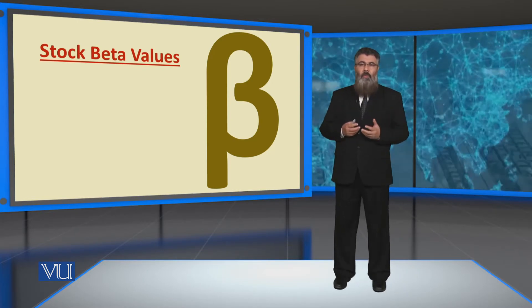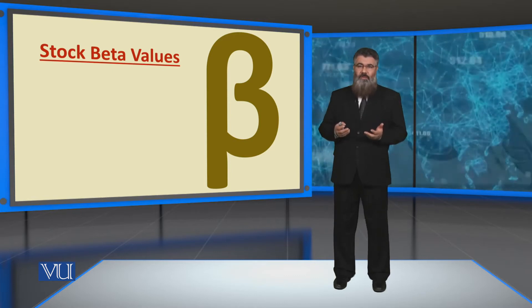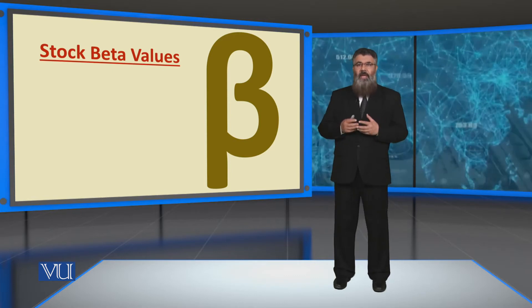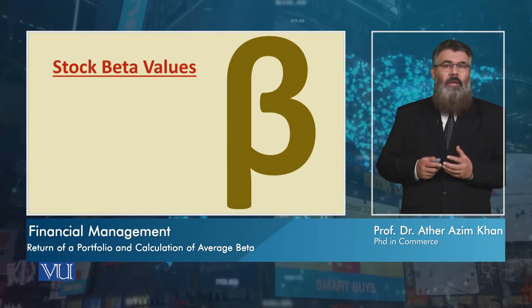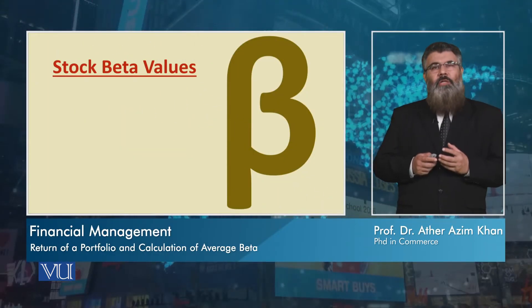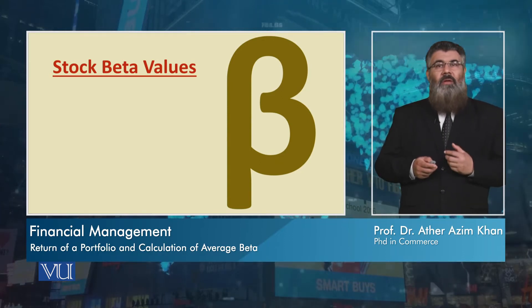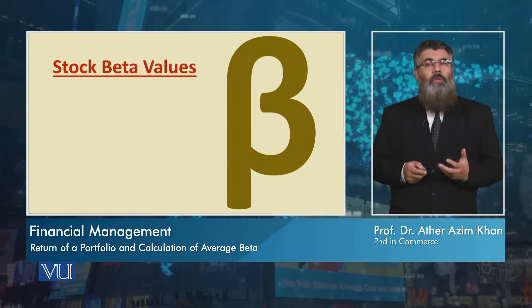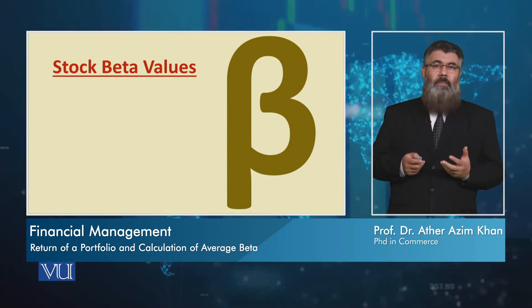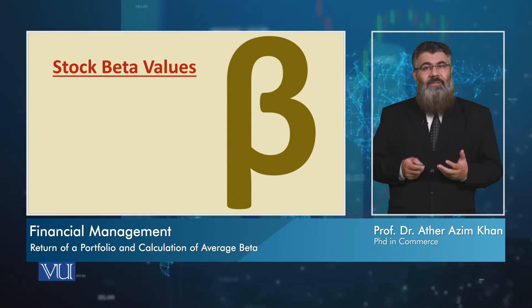When we consider the return of an individual stock and calculate its beta, we look at its relationship with market return. Individual stocks can have risk or return equal to the market, more than the market, or less than the market.